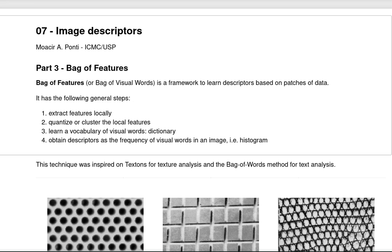It has the following general steps: first we extract features locally, then we quantize or cluster those features. In this clustered space, we learn a vocabulary of visual words that we call the dictionary.